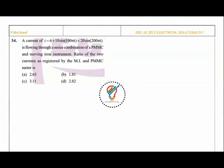Next question: A current I = 6 + 10sin(100πt) + 20sin(200πt) flows through a series combination of PMMC and moving iron instruments. Find the ratio of currents registered by MI and PMMC meters. Remember: PMMC reads only average values, while MI instruments read RMS values.